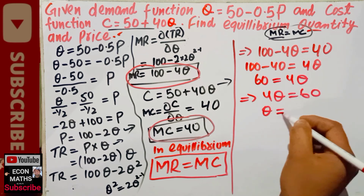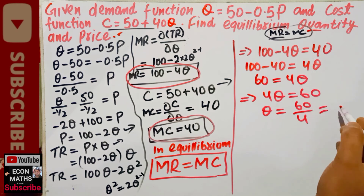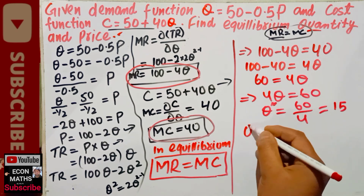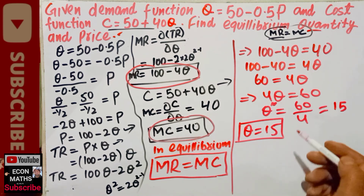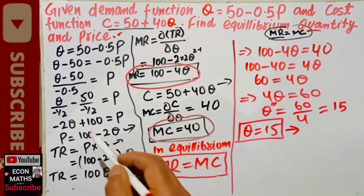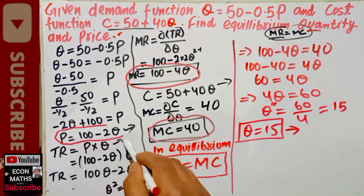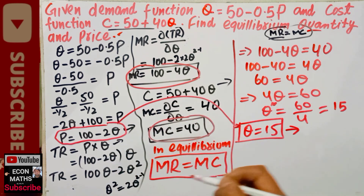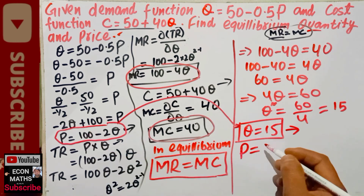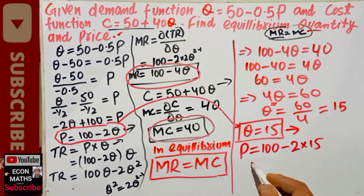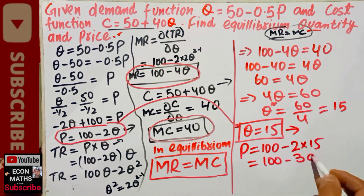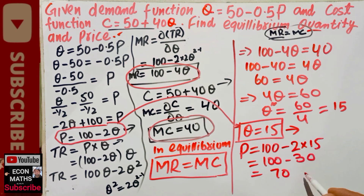So Q = 60 divided by 4, which equals 15. Our equilibrium quantity is 15. To find the equilibrium price, we plug Q = 15 into the price function P = 100 minus 2Q: P = 100 minus 2 times 15 = 100 minus 30 = 70. Our equilibrium price is 70.